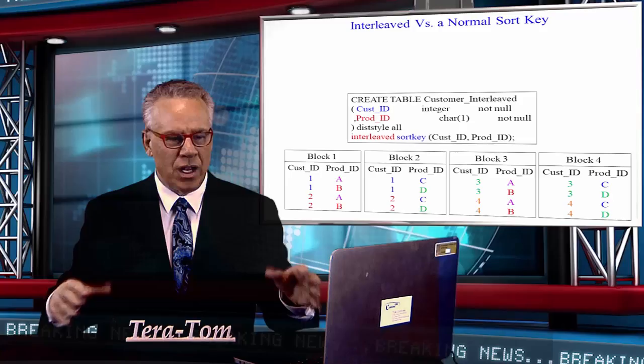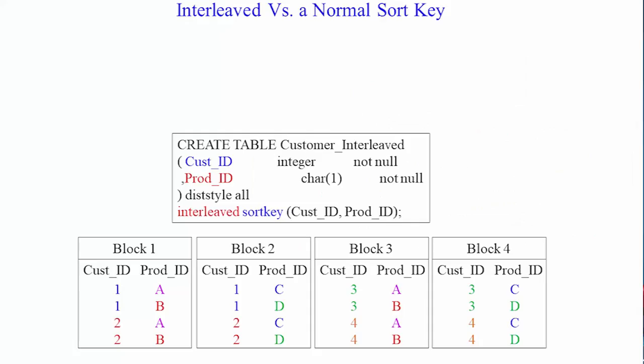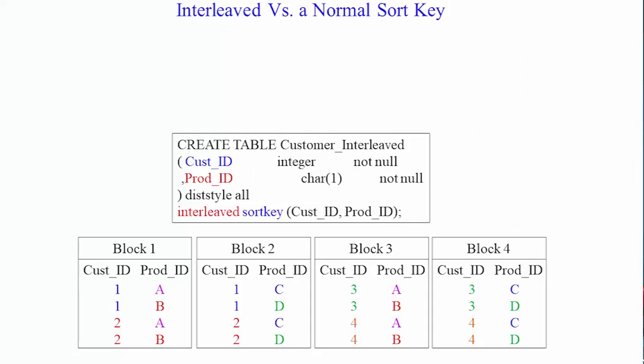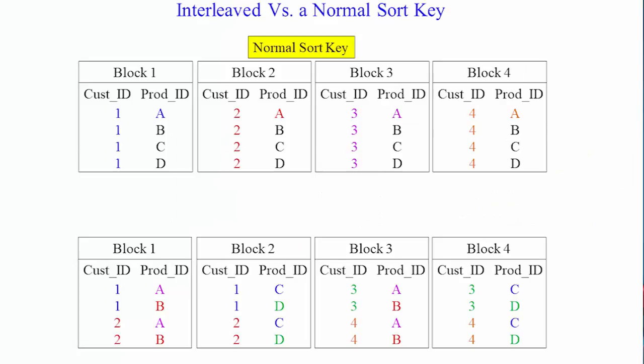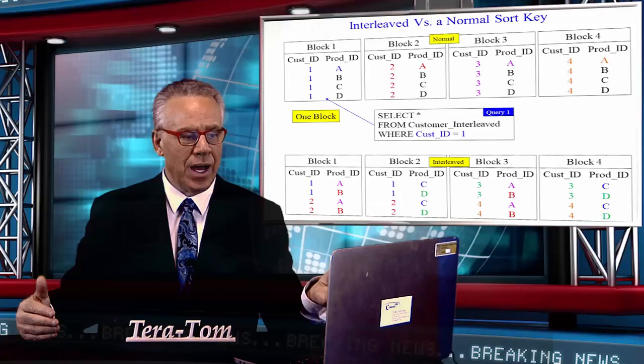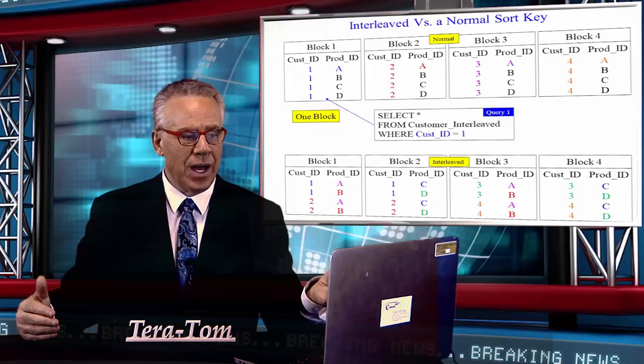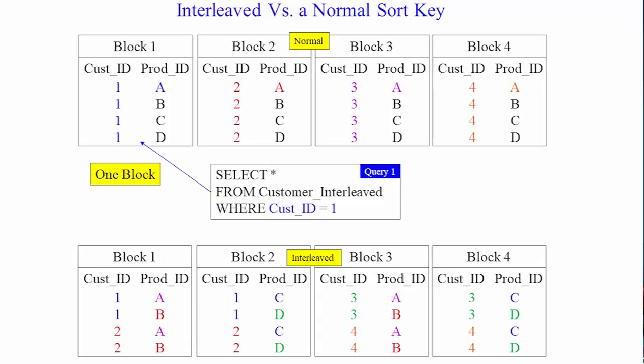That's the real give and take here. You see, in some queries, the normal sort key will be better versus the interleaved, and vice versa. Let's take a look at query one. Select everything from customer interleaved, where cust ID equals one. It only reads one block. But, when we say select everything from customer interleaved, where product ID equals A, it has to read all four at the top.